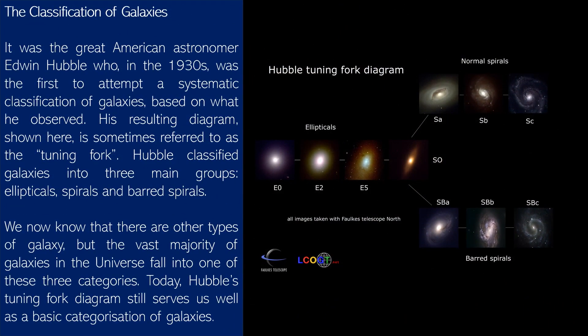It was the great American astronomer Edwin Hubble who, in the 1930s, was the first to attempt a systematic classification of galaxies based on what he observed. His resulting diagram, shown here, is sometimes referred to as the tuning fork.